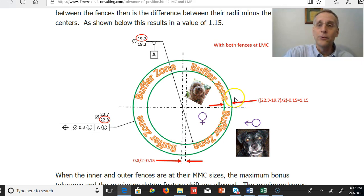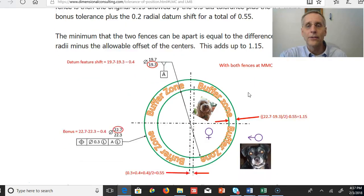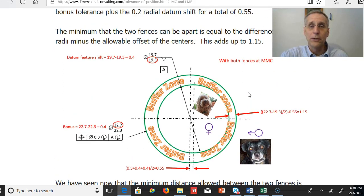So that's at least material condition, least material boundary. Let's see what happens when these two fences are at their max material condition, max material boundary size.